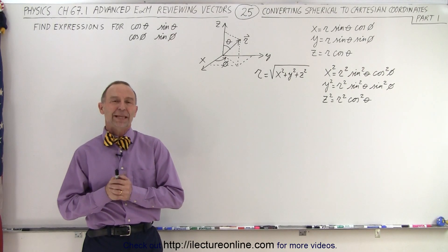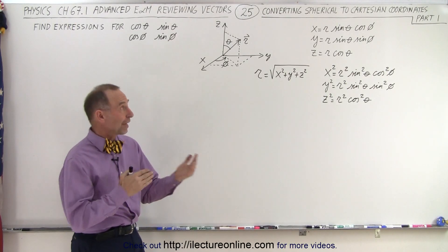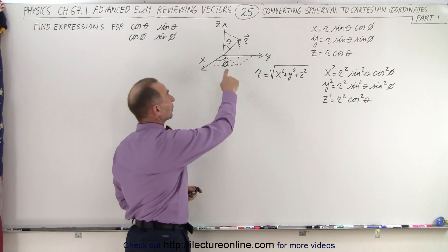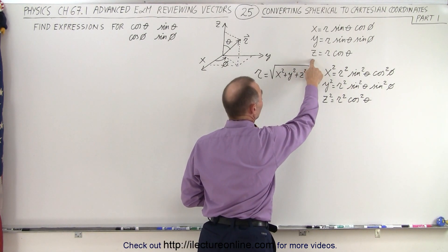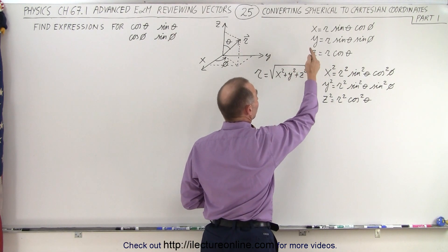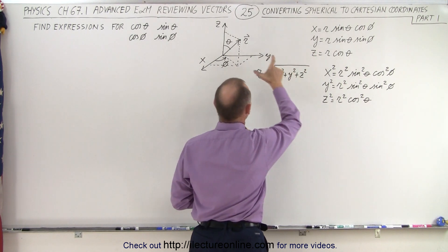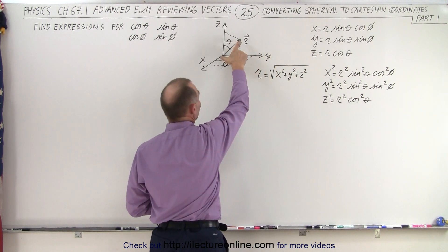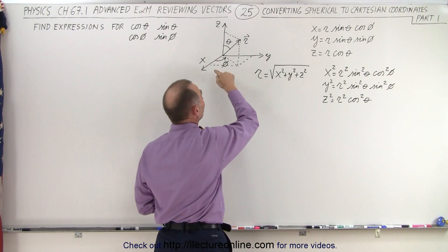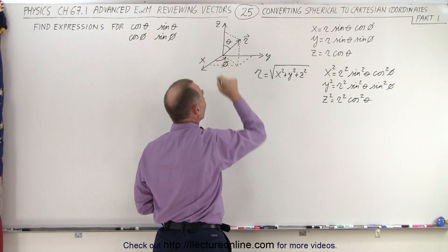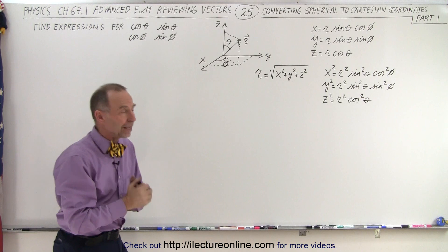Welcome to our lecture online. In the previous video we were able to find the relationship between spherical coordinates and Cartesian coordinates. We were able to define x, y, and z in terms of r, which is the length of the position vector of a point in space, and the angles theta and phi.